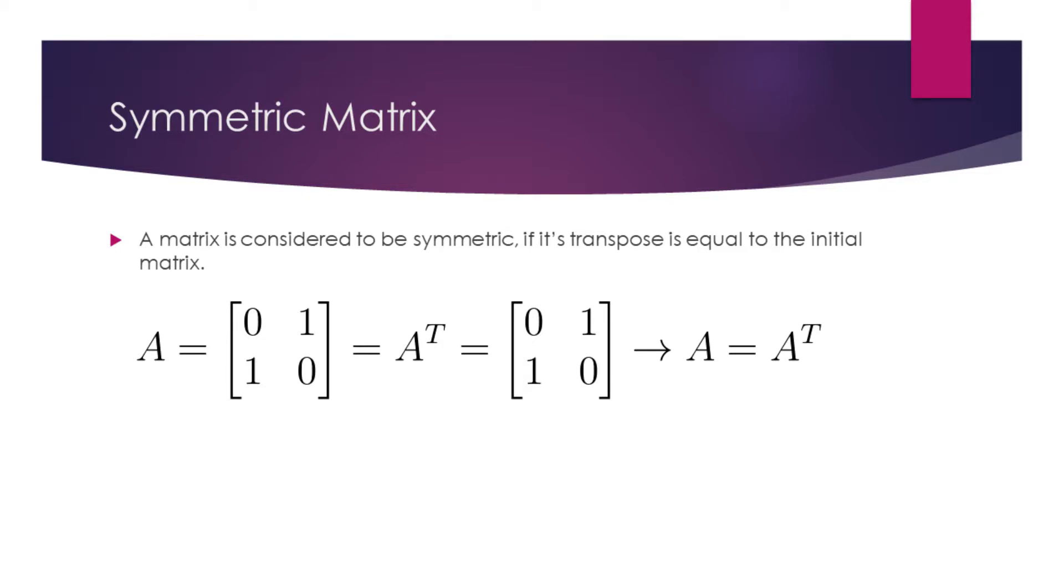A matrix is considered to be symmetric if its transpose is equal to the initial matrix. Consider the matrix A. If we take its transpose, we will obtain the result which is equal to A. So the transpose of A is equal to A. This makes A a symmetric matrix.